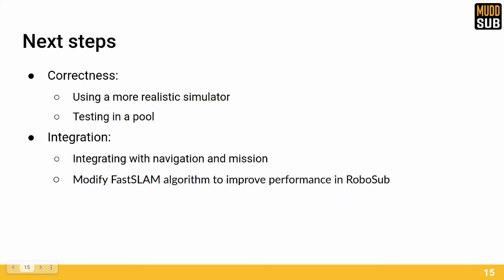In order to address the drawbacks of both the dataset and our custom simulator, we eventually plan to use a more realistic simulator. Eventually, we also hope to be able to test our algorithm in the pool. Our next step after that will be to begin integrating our algorithm with the navigation and mission subsystems, which use the output of SLAM to make decisions about how the robot should move. Finally, we hope to be able to take advantage of RoboSub's specific features, such as the shape of the pool, or access to reliable depth measurements to improve our algorithm.